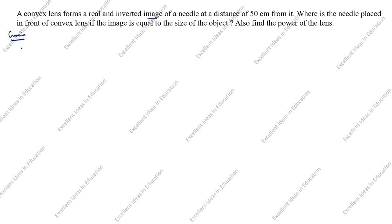What is given: a real and inverted image of a needle, so image distance v is equal to 50 centimeters. For a convex lens, image distance is positive. We need to find u — where the needle is placed in front of the lens. Since the image is equal in size to the object, magnification m equals minus 1. We take minus 1 because the image is real and inverted.